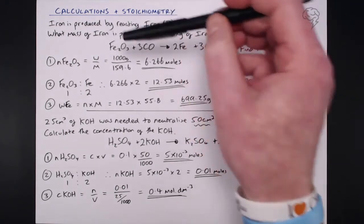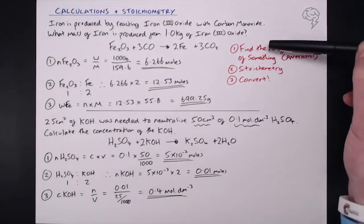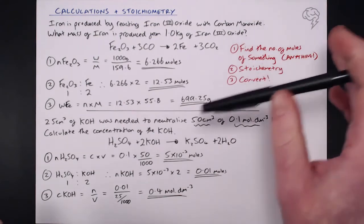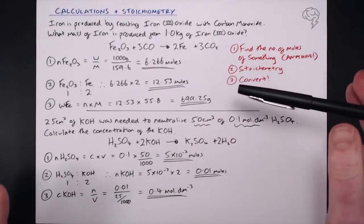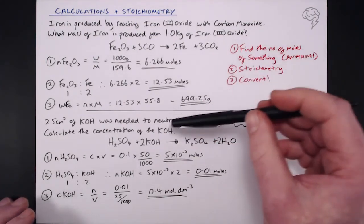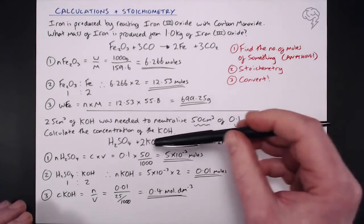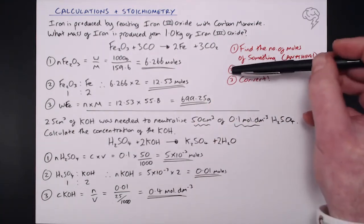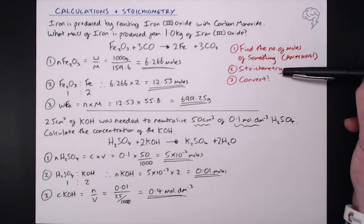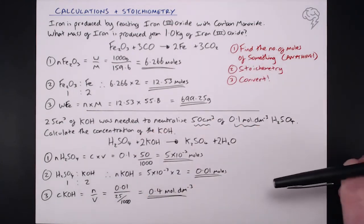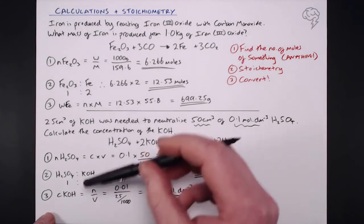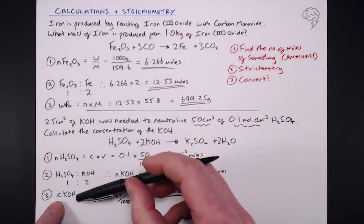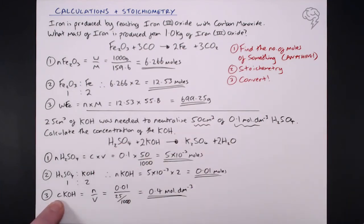Our three steps using calculations and stoichiometry: first, find the number of moles of something — the information will be in the question. Second, stoichiometry — once you have the number of moles of one thing, you can find the number of moles of anything else in the equation. Third, convert: in the first example, number of moles into a mass; in the second, number of moles into a concentration.